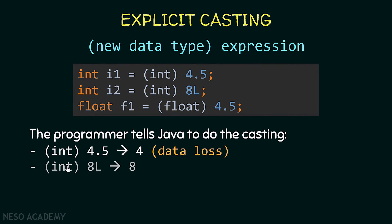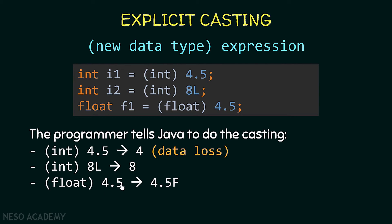Converting a long value of 8 to an integer gives 8 with no data loss, and we can store it in the variable. Converting 4.5 (a double) to a float gives 4.5f, which can then be stored in a float variable. Note that even when there is no data loss, Java will still not do the conversion automatically — the programmer must use explicit casting.